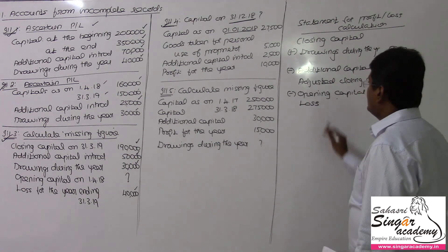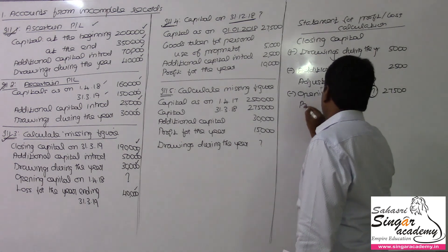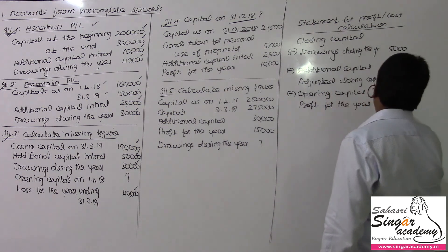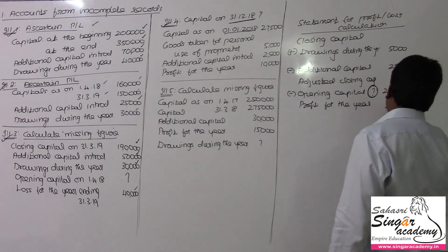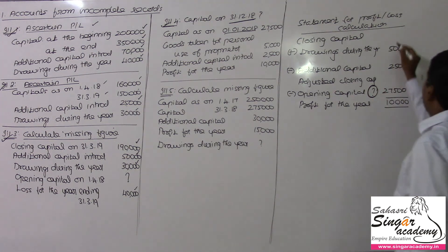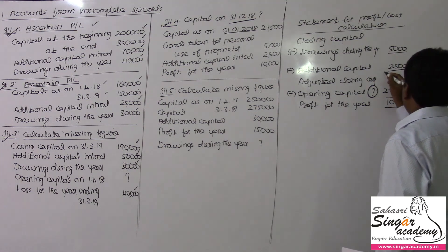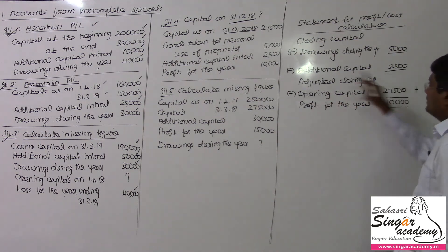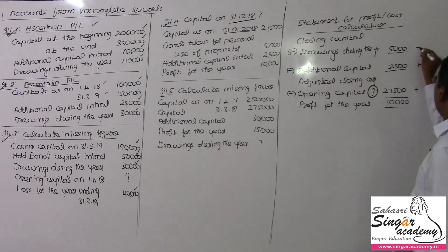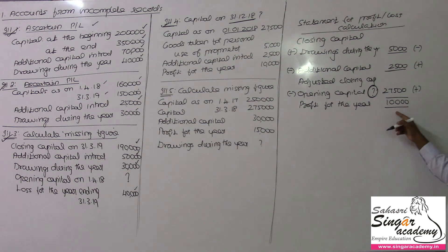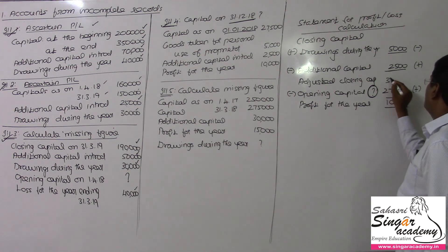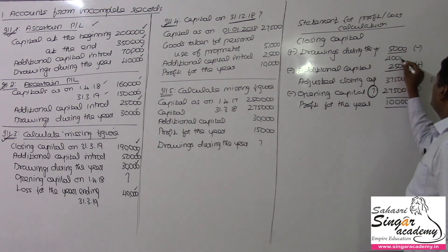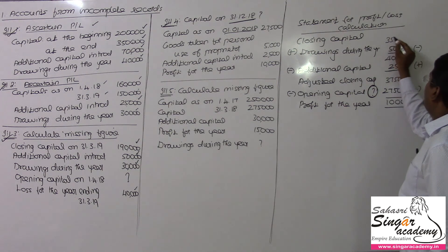Profit for the year — it is not a loss, it's profit for the year — is 10,000 rupees. Reverse calculate to do this. So: 10,000 plus 27,500 equals 37,500. Then 37,500 plus 2,500 equals 40,000. Then 40,000 minus 5,000: 35,000 should be the closing capital.